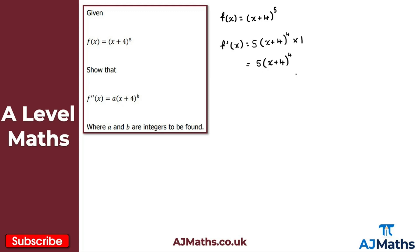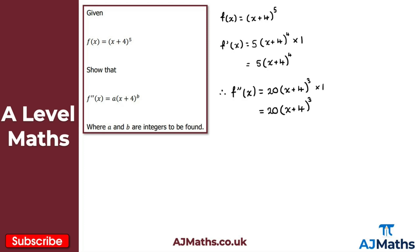Now we need the second derivative, f''(x), by differentiating f'(x) = 5(x + 4)⁴ using the chain rule again. Take the power 4, multiply by the coefficient 5: 5 times 4 gives 20. Multiply by the bracket (x + 4), reduce the power by 1 to get power of 3. The derivative of the inside is 1 again, so f''(x) equals 20(x + 4)³.